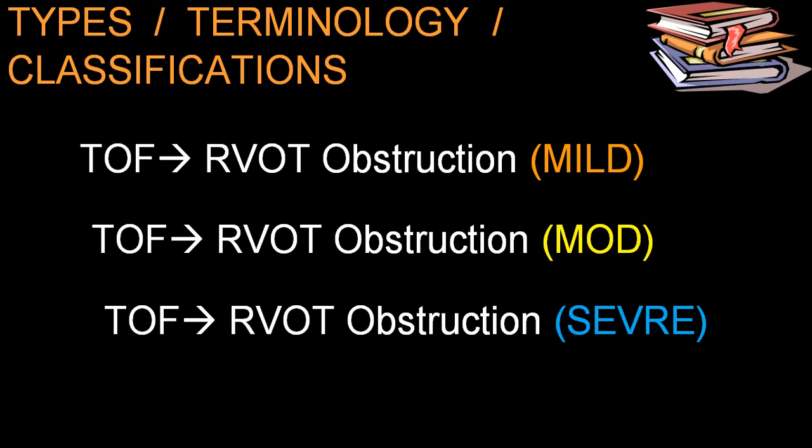Depending on severity, TOF is divided into mild, moderate, and severe. In the severe variety, there is near-complete pulmonary atresia, while in the mild variety there is very mild infundibular pulmonary stenosis and patients are often not cyanotic.